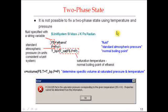One important note about two-phase states — a common mistake is that you cannot fix a two-phase state using temperature and pressure. If you give me the saturation temperature and the saturation pressure, I don't know that state — it could be anywhere from saturated liquid to saturated vapor. So it's important that you don't accidentally do that.